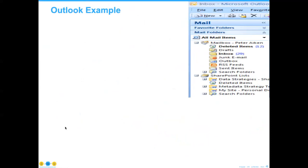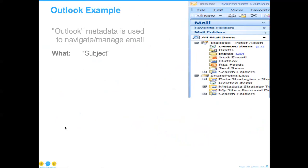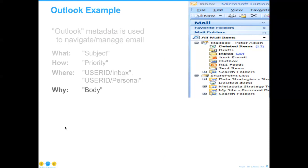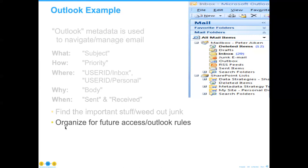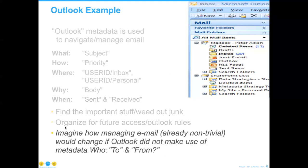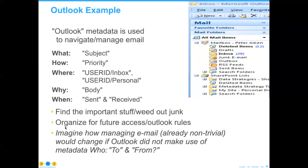Here's another example that's very easy to understand. If you're using Outlook or any of the mail clients, you have the same columns — what, how, where, why — all in your email. You can sort on them, find important stuff, weed out the junk, and organize for future access. Can you imagine trying to do this if you did not have who, from, or to? Metadata really is everywhere, and it's integral to everything that happens.